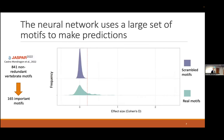We did this using a large set of 841 motifs from the JASPER database — different from the standard approach of learning positional weight matrix motifs directly. For each motif, we calculate the effect size for the real motif against the backbone set and the scrambled motif against the backbone set. The scrambled serves as our null expectation, and we use a cutoff of the maximum scrambled effect size to identify important motifs, narrowing 841 down to approximately 165.